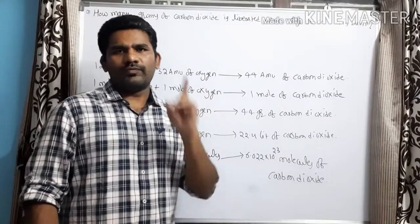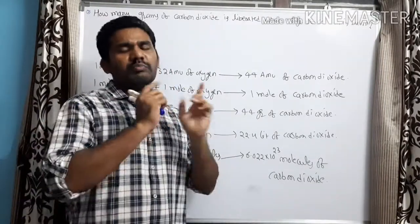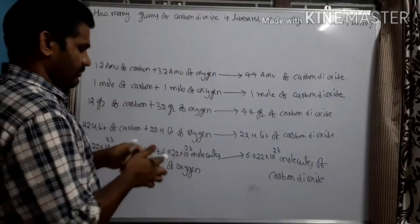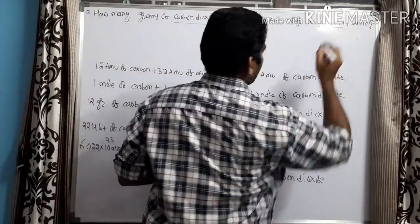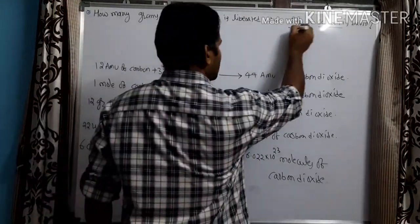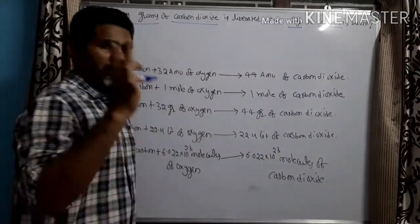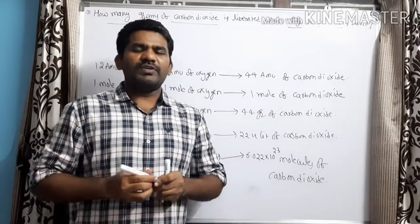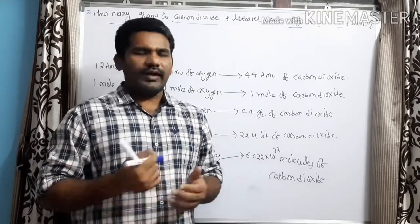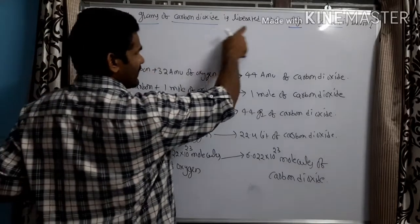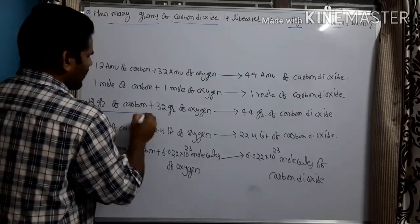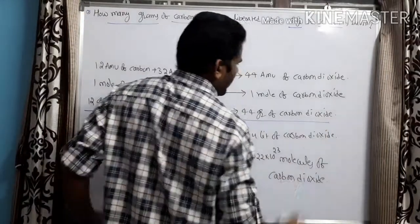Two important things to note. First: between which substances the relation is being asked — here it is between carbon and carbon dioxide. Second: in which units is the answer required — here it is in grams. The relation from the equation is: when 12 grams of carbon is burnt, 44 grams of carbon dioxide will be liberated.